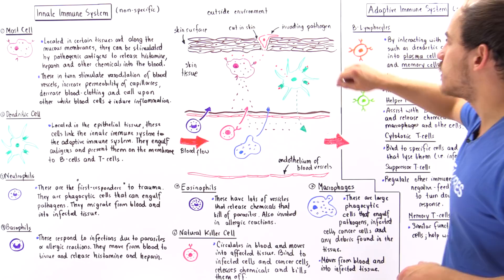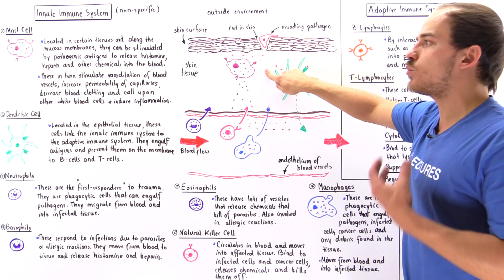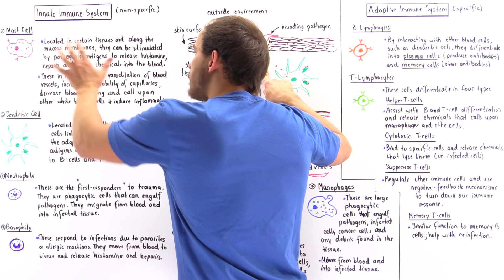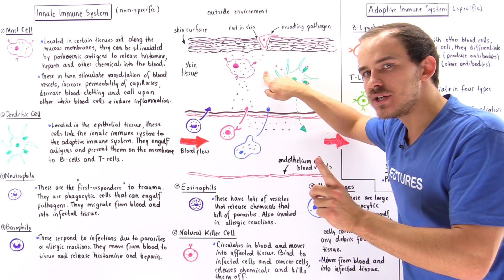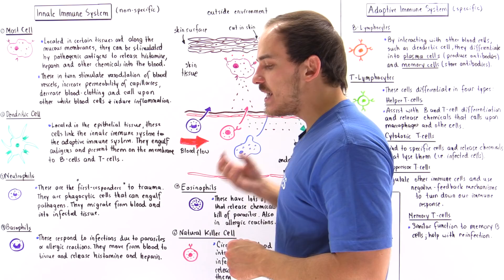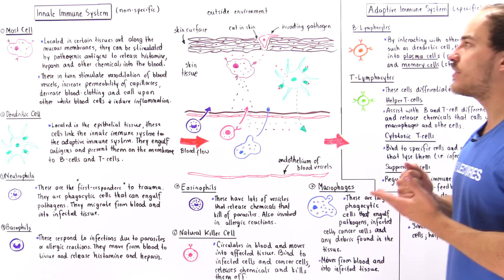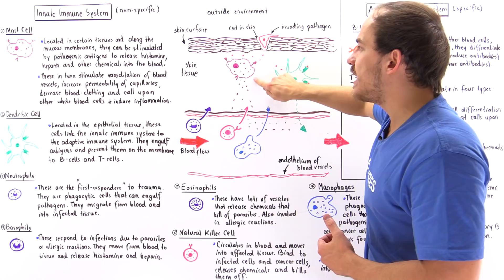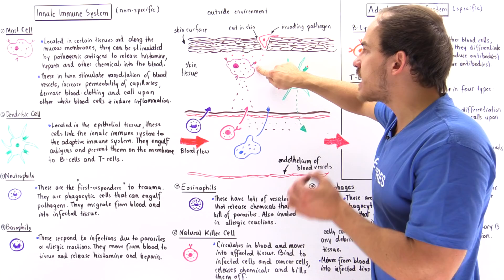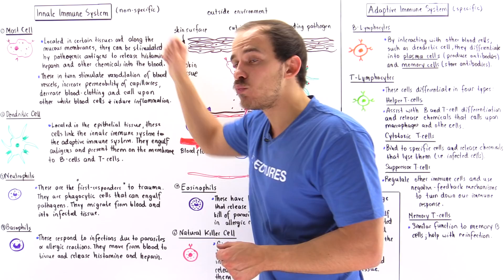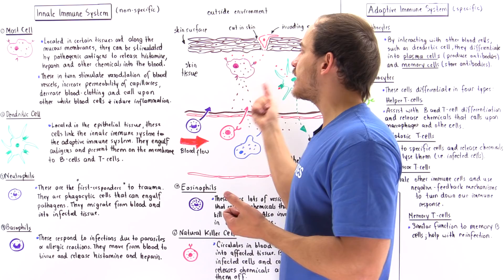So let's suppose our pathogen invades our skin tissue. The first thing that will happen is a mast cell and a dendritic cell will react to the antigens produced by that pathogen. The pathogen will begin producing an antigen — let's assume it is some type of pathogenic peptide, shown by these red dots. Mast cells have receptors on their surface that can bind antigens non-specifically, meaning they will bind any antigen regardless of type.